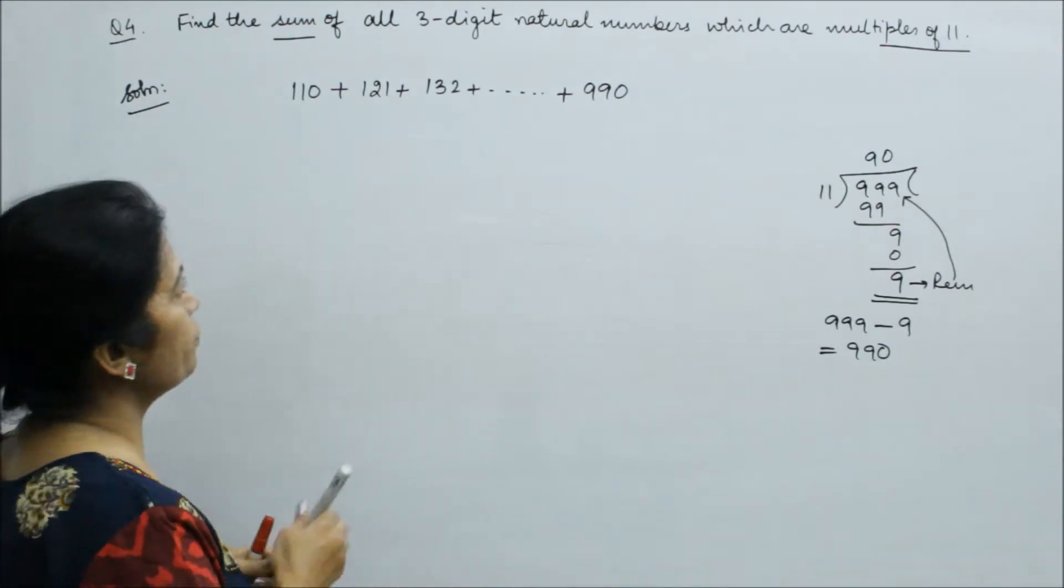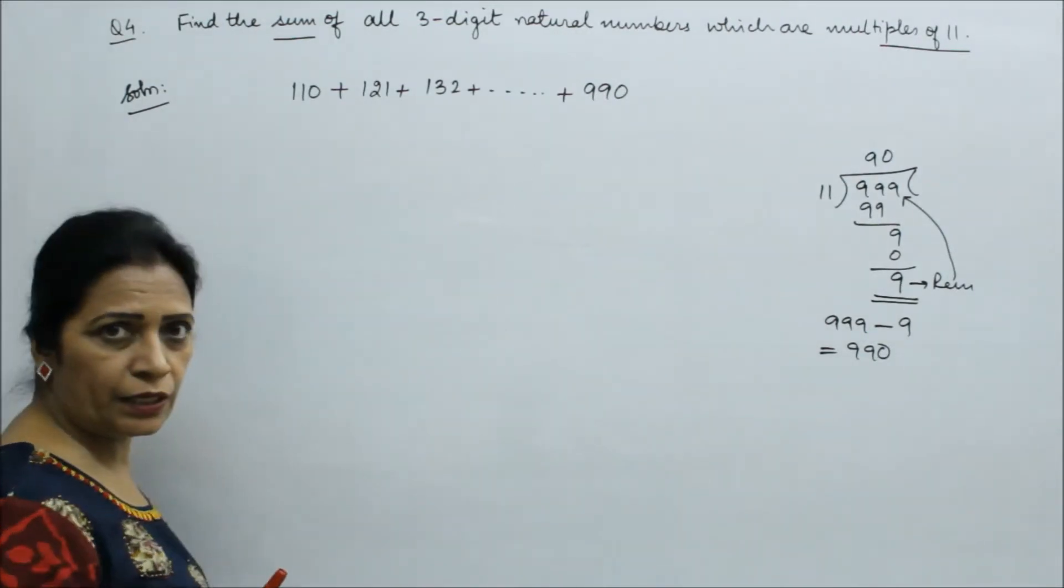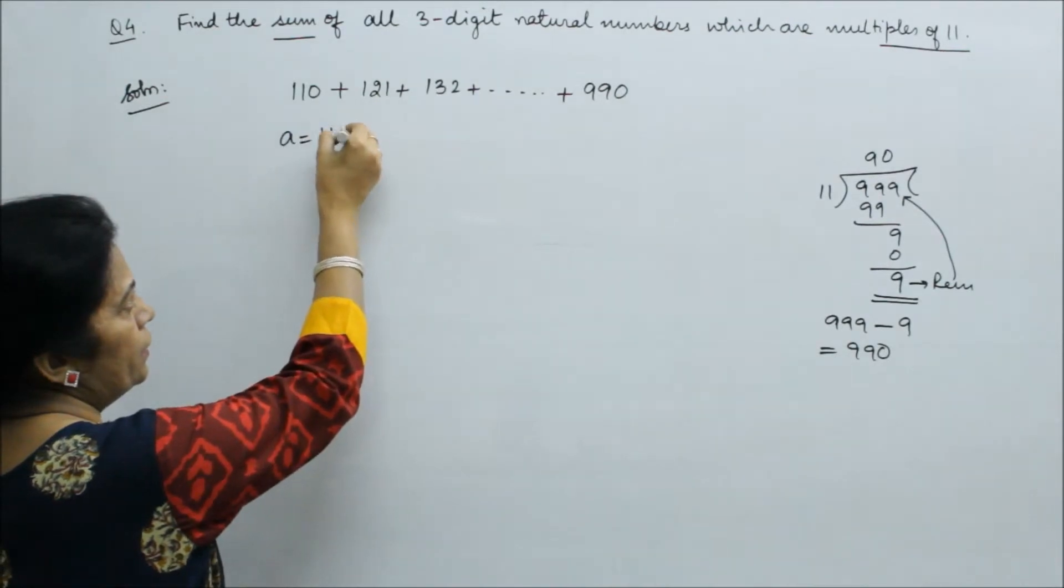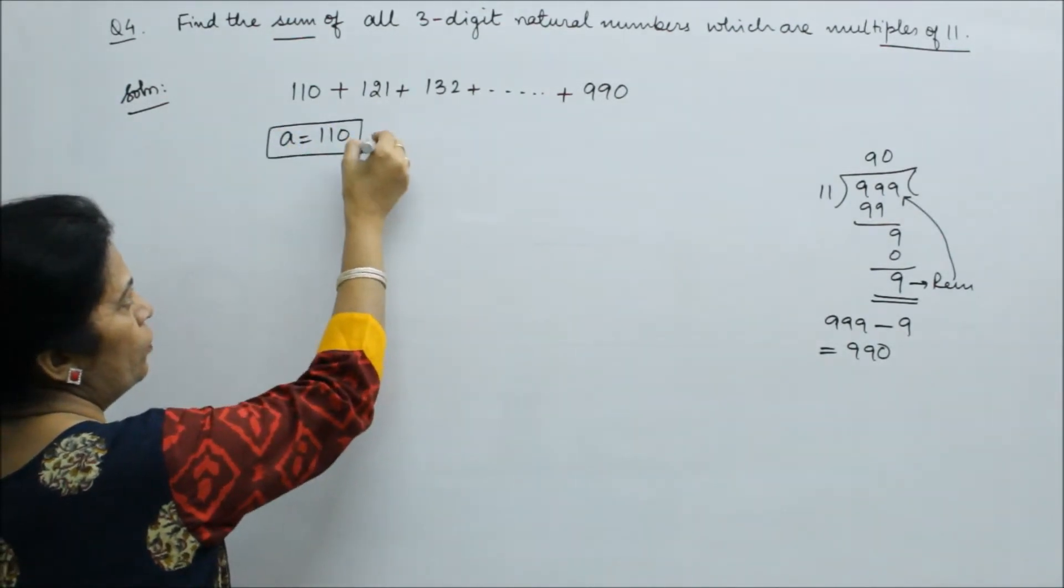Now these terms, look at the AP. So a is 110. And what is d? How much is d? You can see it is 11, so d is 11.